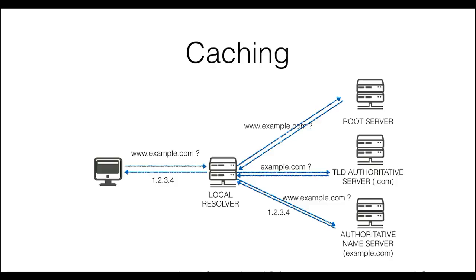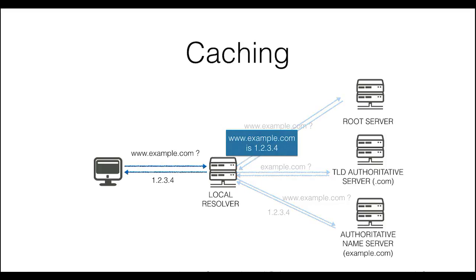In the introduction, we have seen the typical name resolution process. In practice, for efficiency reasons and to keep the number of DNS messages on the internet lower, only part of this process might take place. Resolvers have a local cache of recently retrieved records that is used to answer frequent queries. Imagine students in a campus dormitory all accessing Facebook — it would be a waste of time and resources to resolve Facebook.com for each one of those requests. The result of this query can be served directly from the local resolver cache.